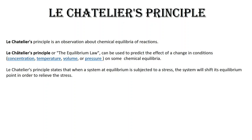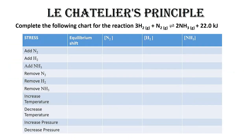After the equilibrium has been stressed and re-established, there are a new set of product and reactant concentrations. We are going to practice Le Chatelier's Principle using the formation of ammonia, where three moles of hydrogen gas react with one mole of nitrogen gas to produce two moles of ammonia and 22 kilojoules of energy. The energy is written as a product, meaning this is an exothermic reaction, and temperature changes will affect it in a specific way.